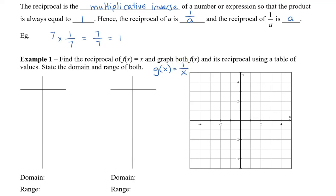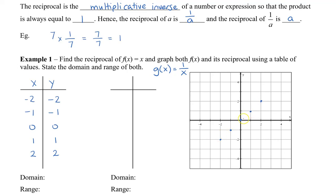Let's create a table of values and start with the original function — x and y. We'll take some negative numbers, 0, and some positive numbers. When we plug it in, because f of x equals x is a straight line, we get the same y values as our x values. When we graph this, we get a line that goes through (0, 0).